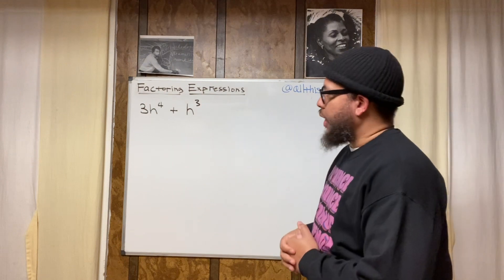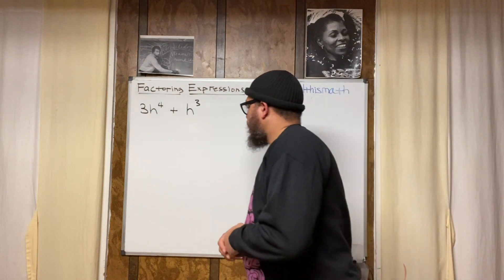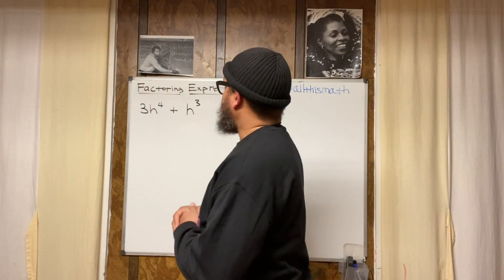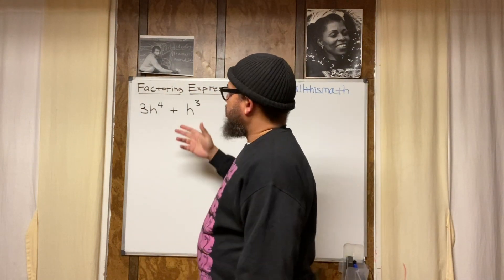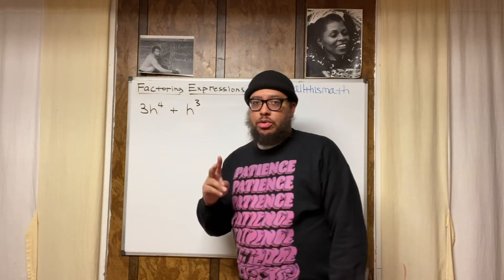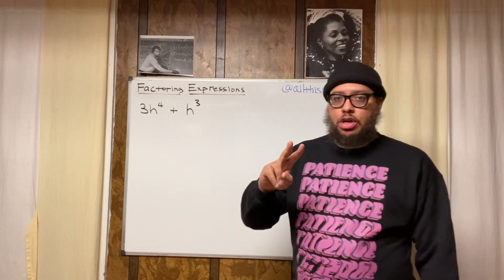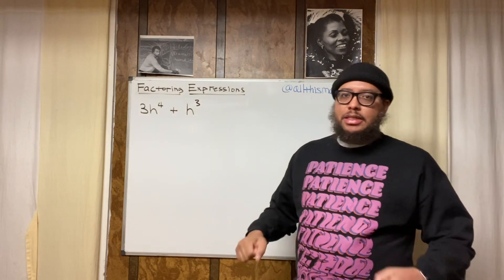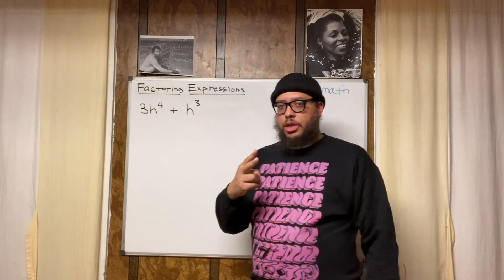So let's take a look at what we got here. We have this binomial. It's a binomial because it's got two terms, just like a bicycle has two wheels.